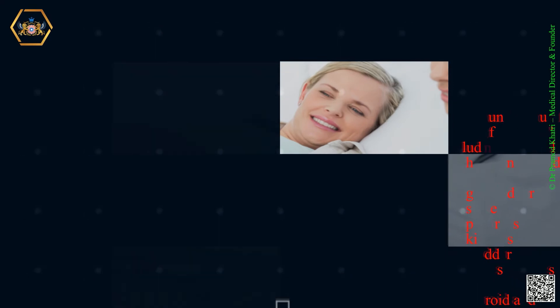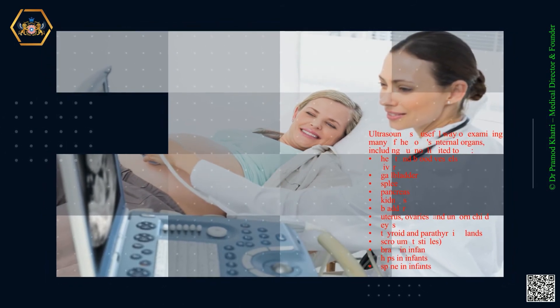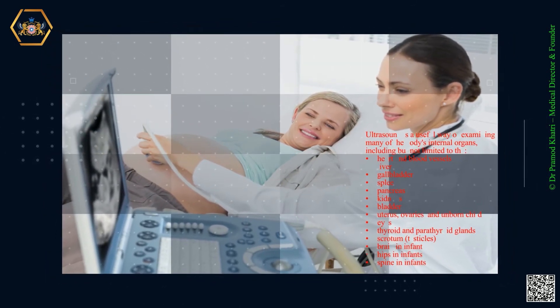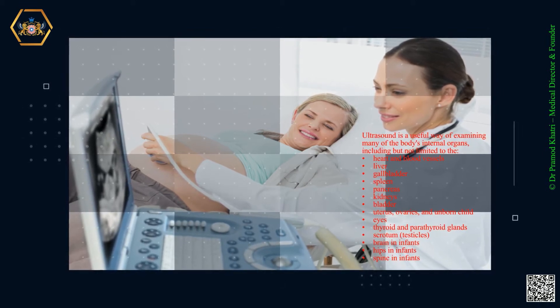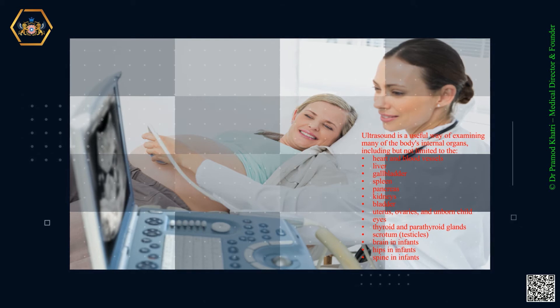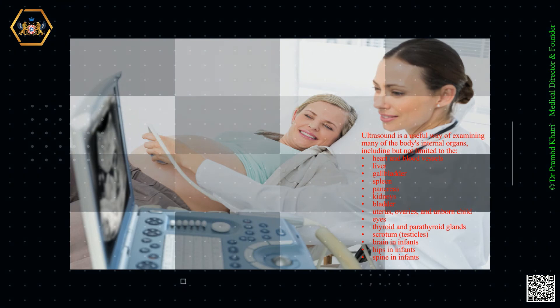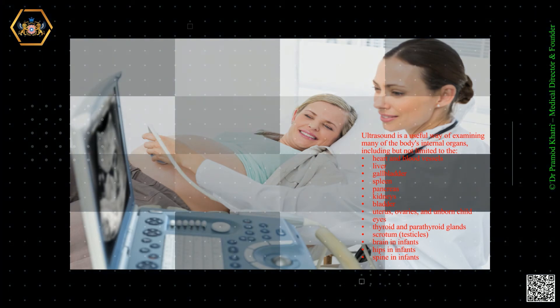Ultrasound is a useful way of examining many of the body's internal organs, including but not limited to the heart and blood vessels, liver, gallbladder, spleen, pancreas, kidneys, bladder, uterus, ovaries, an unborn child, eyes, thyroid and parathyroid glands, scrotum, testicles, brain in infants, hips in infants, and spine in infants.